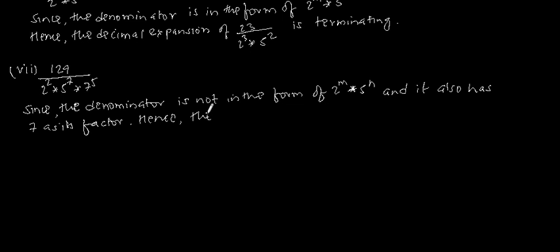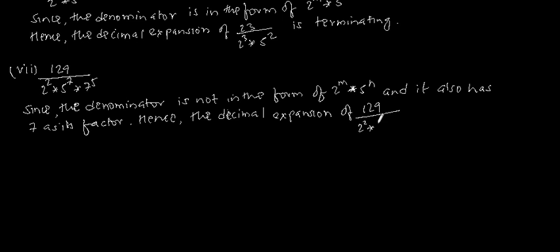Hence the decimal expansion of 129 by 2 to the power 2 into 5 to the power 7 into 7 to the power 5 is non-terminating repeating.